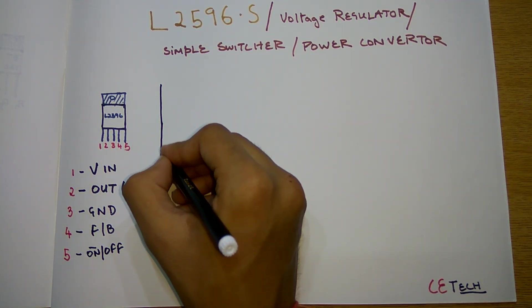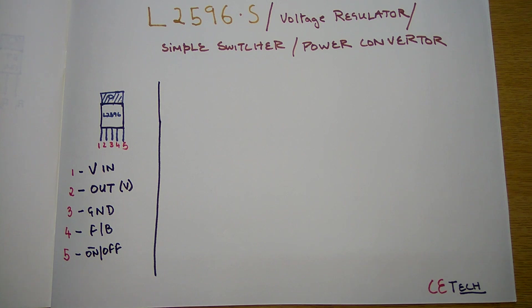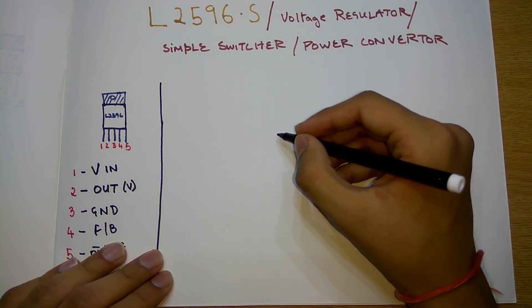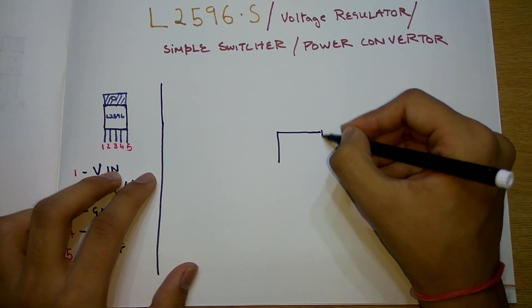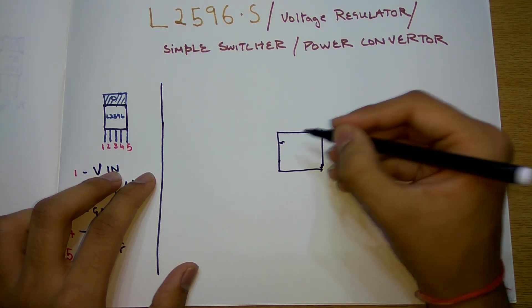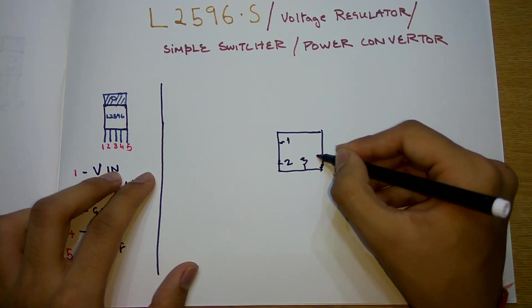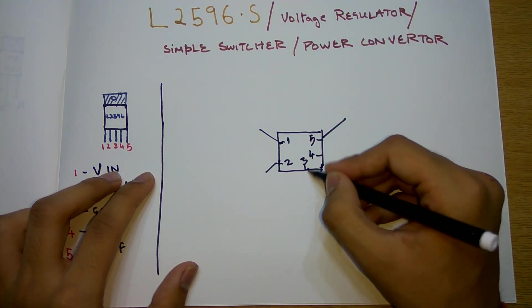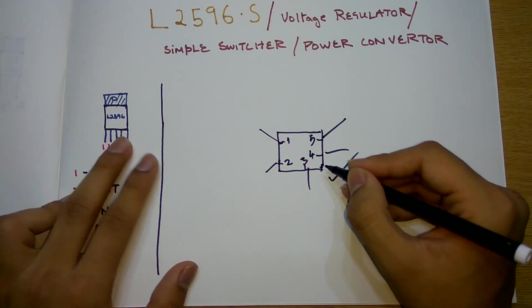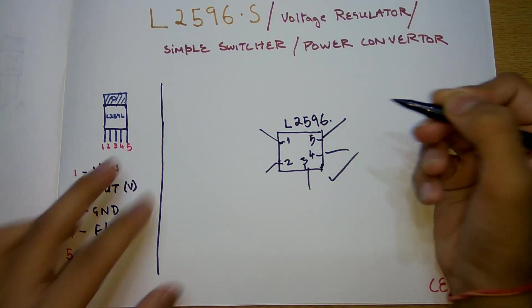Now we will see a basic block diagram of this regulator. So when we use this IC in the circuit, we have a block like this and we can accordingly put any number - say 1, 2, 3, 4, 5 - and connect it to various sources. So we will use this type of diagram for this L2596 voltage regulator IC.